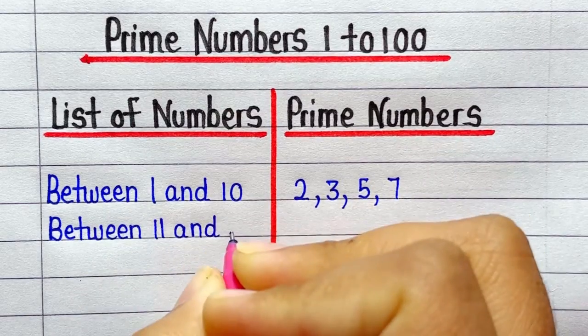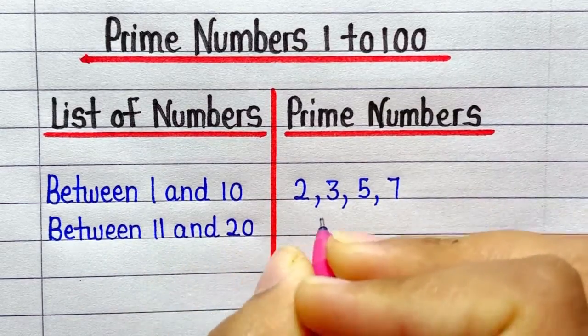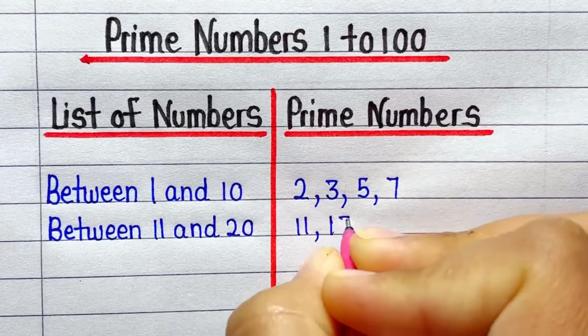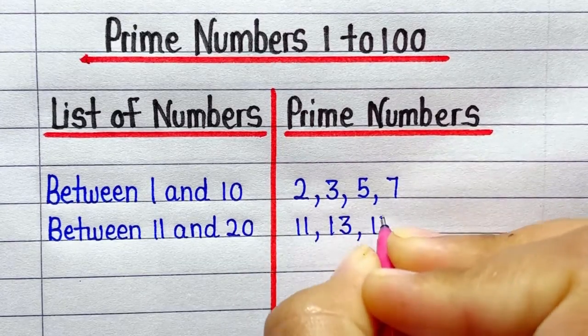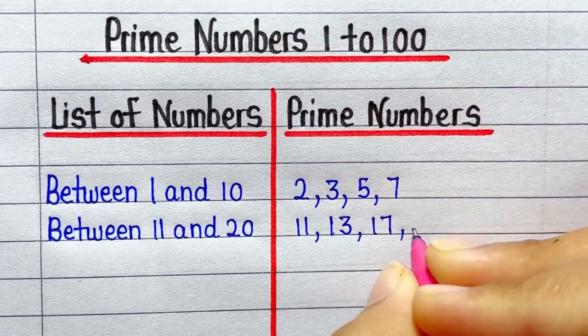Prime numbers between 11 and 20 are 11, 13, 17, 19.